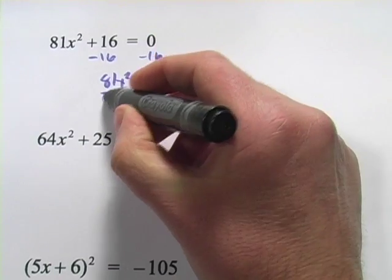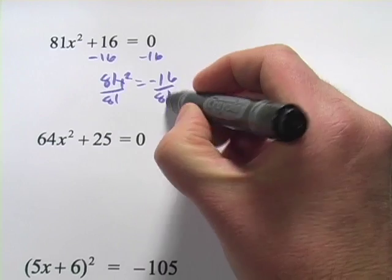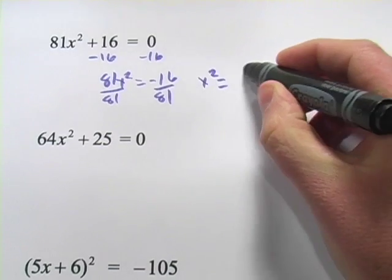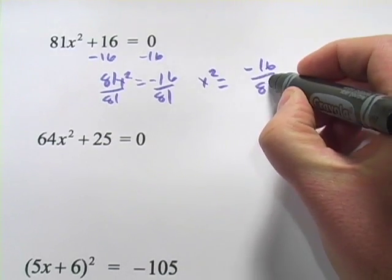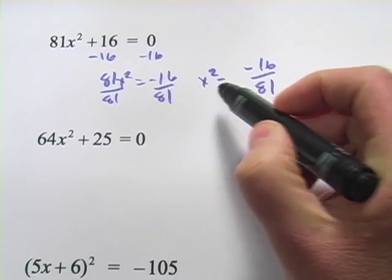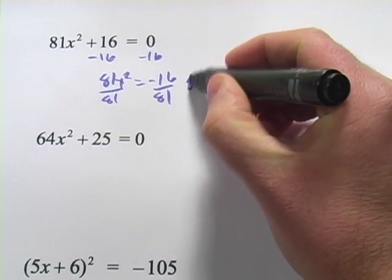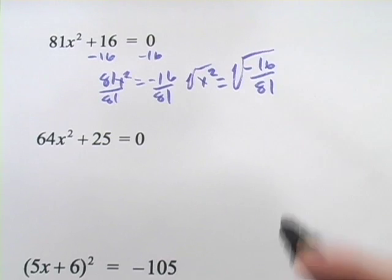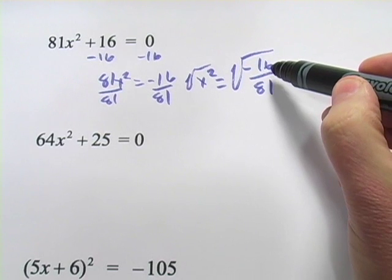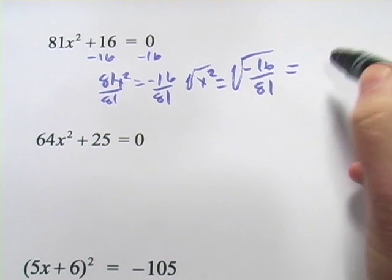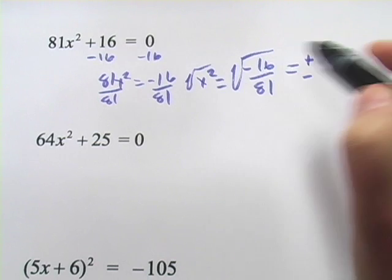Then I'm going to divide by 81, and I get x squared equals negative 16 over 81. At this point, since the x squared is alone, it's a good time to take that square root. And the square root of negative 16, remember this is going to be plus or minus because we took the square root here.